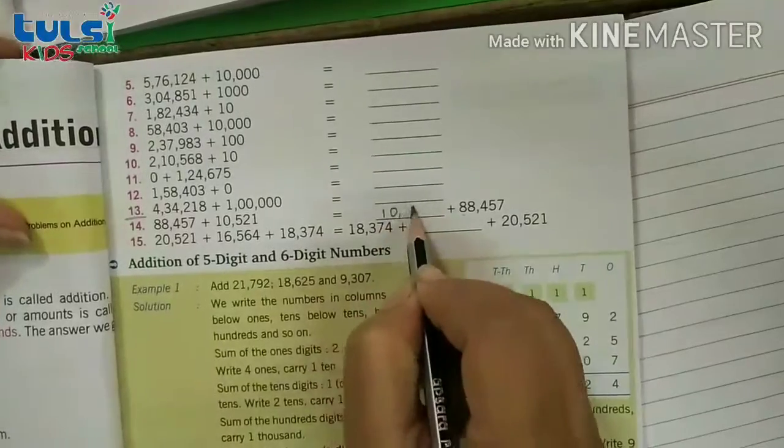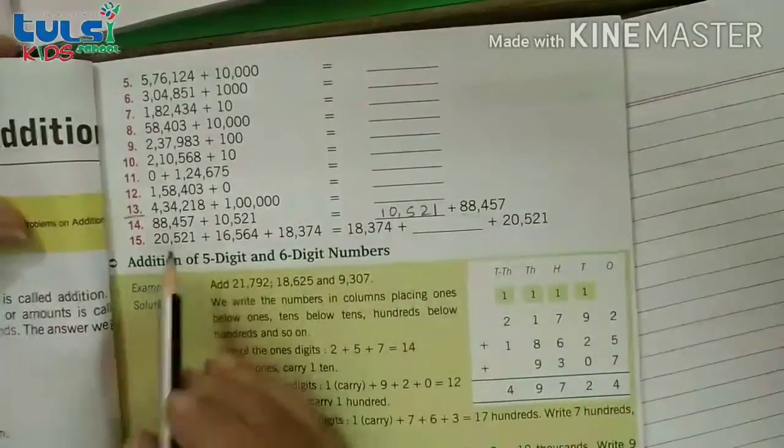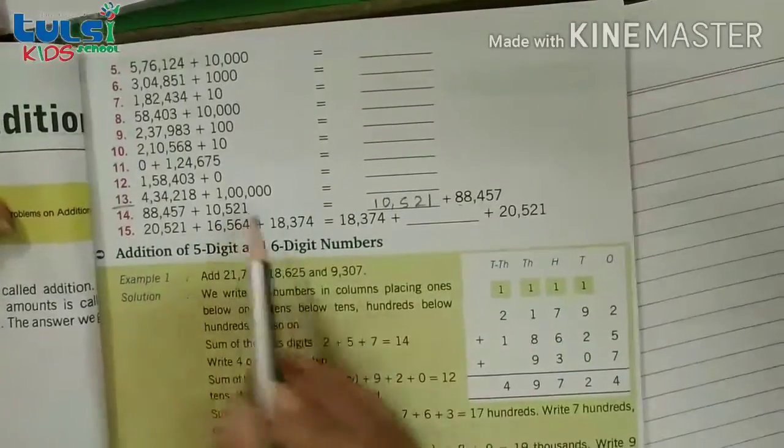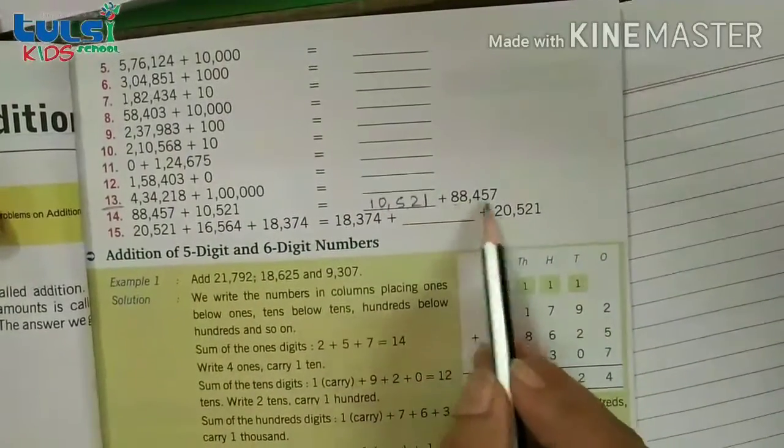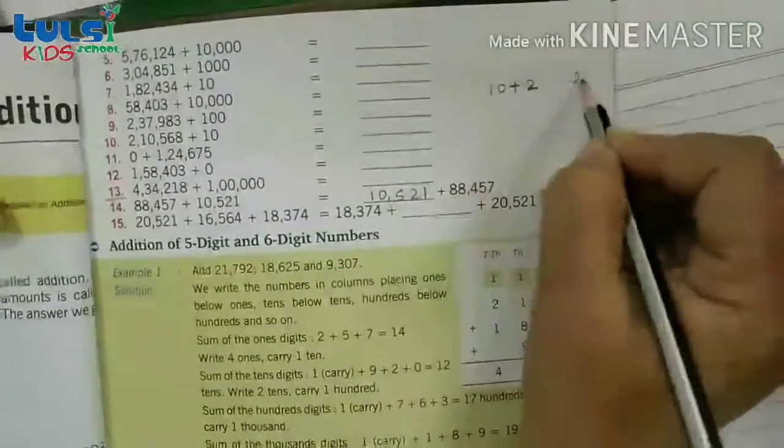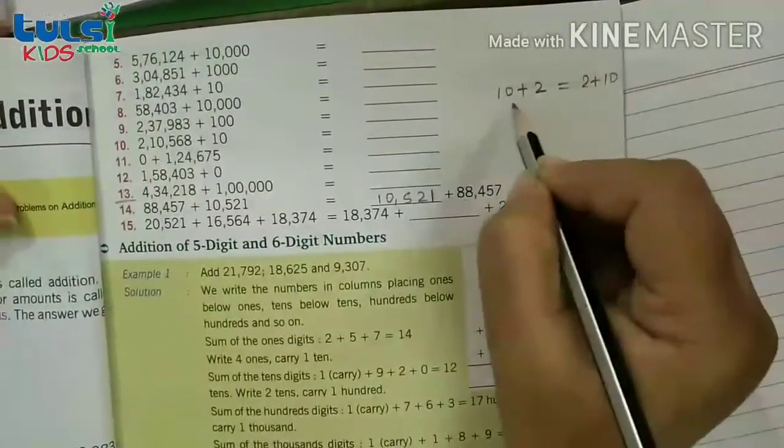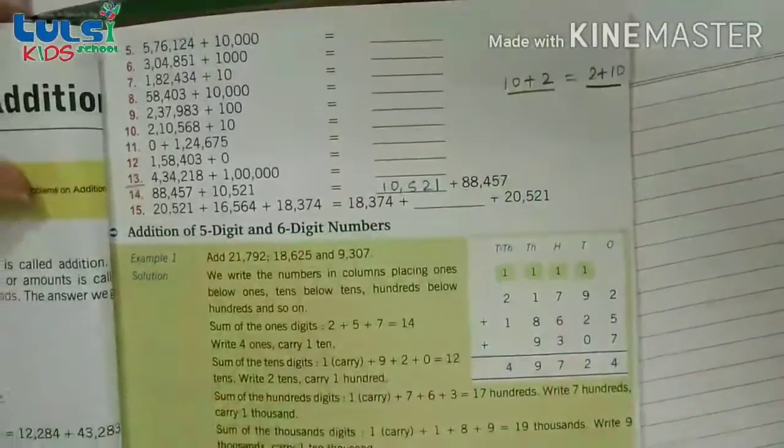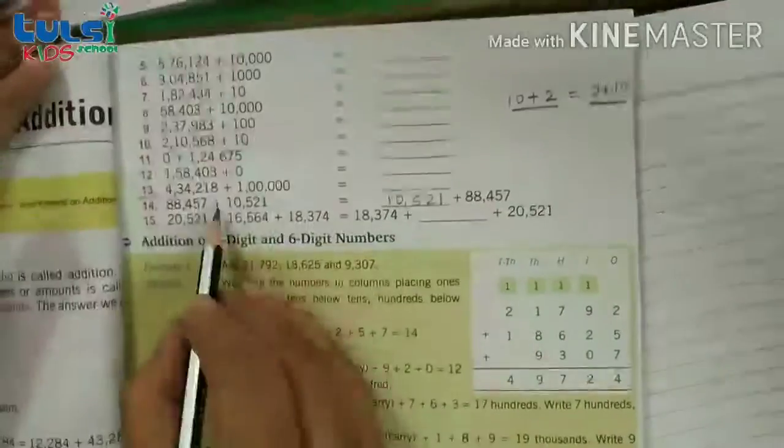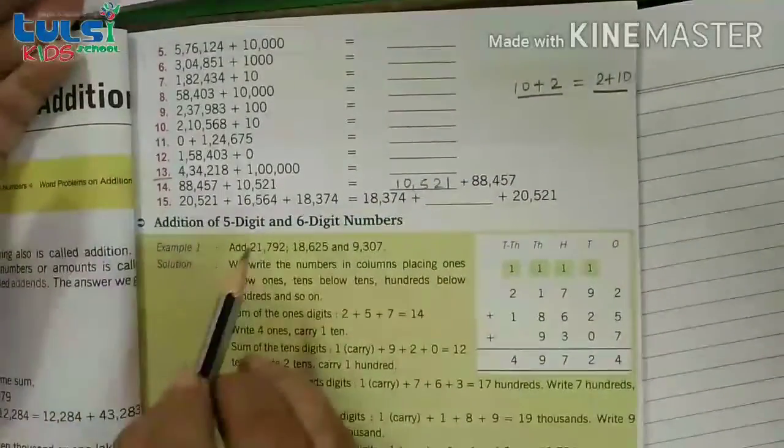Kyunki 88457 me 10521 plus karo, ya 10521 me 88457 plus karo. Means 10 plus 2 karo, ya 2 plus 10 karo. Answer hamesha kaisa aeega? Same. So isi tarikhe se yaha par bhi sirf is digit ko ulta ulta kiya hua hai, aage piche kiya hua hai. Toh is tarikhe se aap log iska answer likh sakti hai.